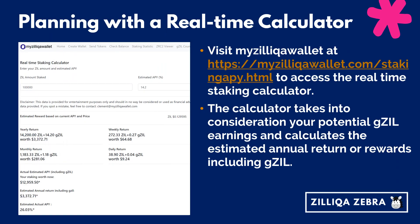If you are planning to do some serious Zilliqa staking, you might want to check out the real-time staking calculator at myZilliqa wallet. The calculator is a useful tool that takes into consideration your potential GZIL earnings and calculates the estimated annual returns factoring in GZIL. For example, if you invest 100,000 ZIL at 14.2% APY, you should get an estimated annual value including GZIL of US$3,372, with an estimated actual APY of 26% — which is really fantastic. With lots of great projects coming up for Zilliqa, you are not only capturing the yield from staking, but also the price appreciation of Zilliqa itself.